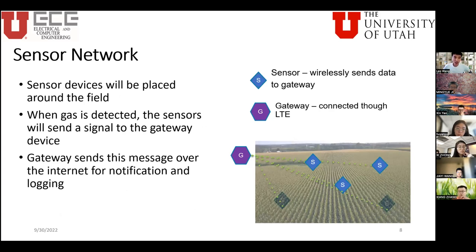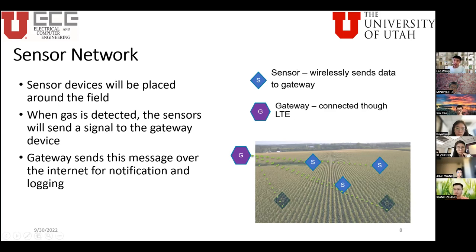For the sensor network, sensor devices will be placed around the field at different locations, with a gateway at the edge of the field. When gas is detected, the sensor sends a signal to the gateway, which forwards the message over the internet to notify the user. The sensor wirelessly sends data to the gateway, and the gateway connects to the internet through an LTE module.